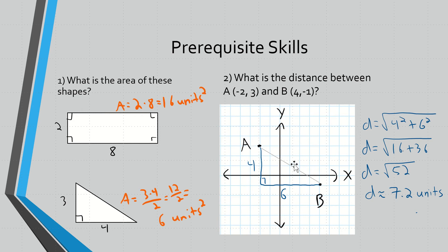For perimeter you should know how to find the distance between two points on the coordinate grid. Here I have these two points plotted with a line between them. To find that distance you can use the distance formula, but for these problems it's probably a little easier to use the Pythagorean theorem. You can draw a right triangle with this distance as the hypotenuse — it would be 4 squared plus 6 squared equals the distance squared. So this distance would be 7.2 units. Make sure you know how to do these two things before we get into the rest of the lesson.